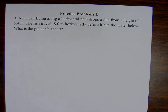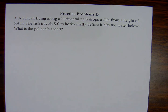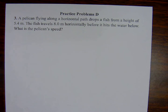Practice problem number three associated with sample problem D. A pelican flying along a horizontal path drops a fish from a height of 5.4 meters. The fish travels 8.0 meters horizontally before it hits the water below. What is the pelican's speed?